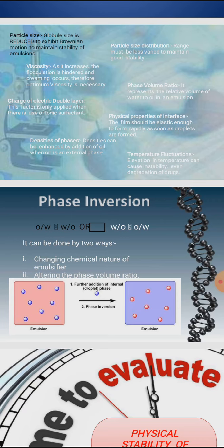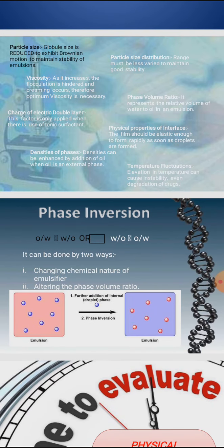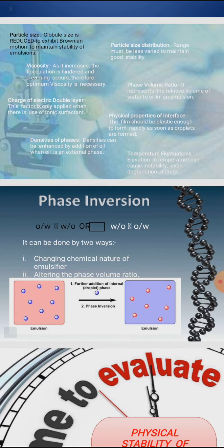To increase the viscosity of the external phase, we can add various thickening agents such as tragacanth, vigam, and cellulose derivatives like methylcellulose and carboxymethylcellulose. In O/W type emulsions, long chain fatty acids or alcohols such as beeswax, stearic acid, and stearyl alcohol are used when oil is the continuous phase. Viscosity determination is an important quality control tool for evaluation of emulsions.